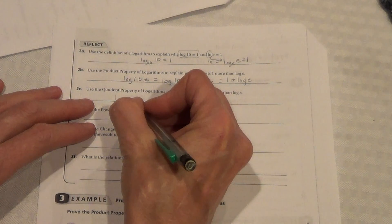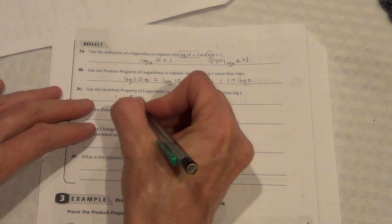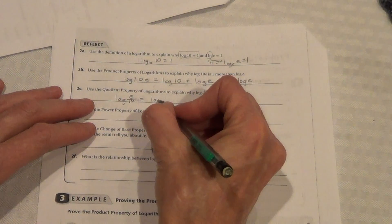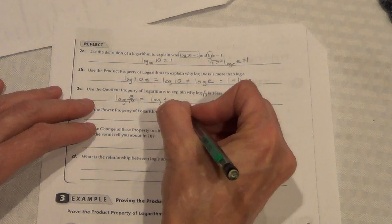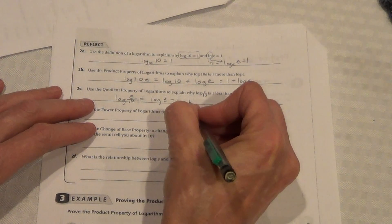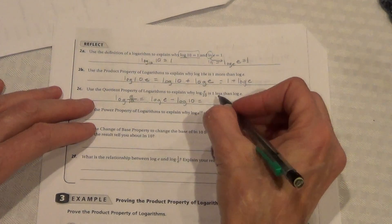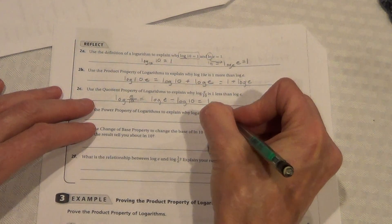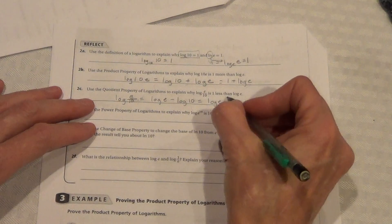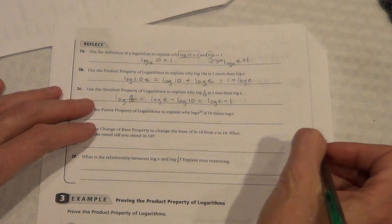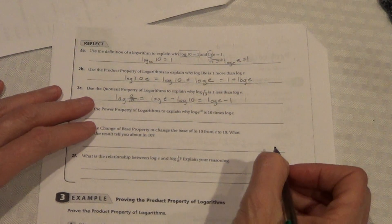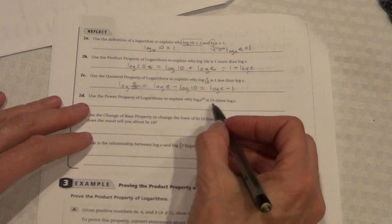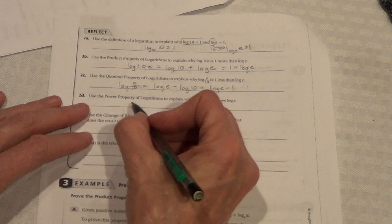Same thing with the log e divided by 10. We're just going to follow the properties. Log e divided by 10. Now, with division, we subtract. So, it's log e minus log 10 equals log e minus 1, and log base 10 of 10 is 1.